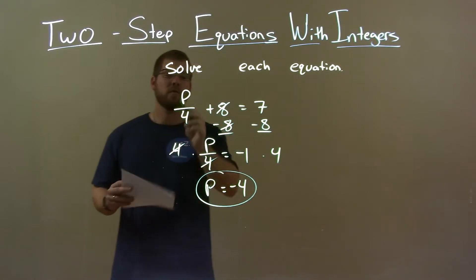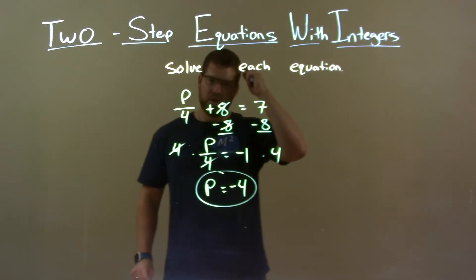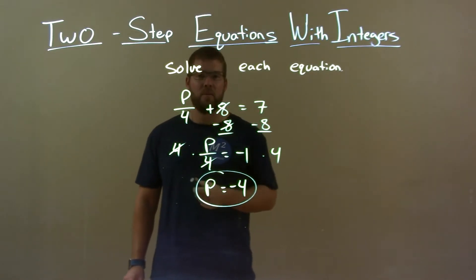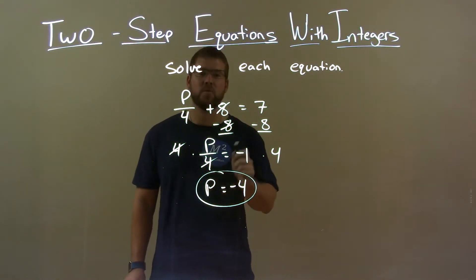Quick recap we're given p over 4 plus 8 equals 7 and we want to solve for p. I subtract 8 to both sides and multiply both sides by 4. That gave me my final answer of p equals a negative 4.